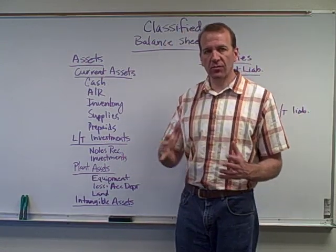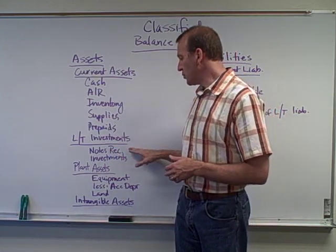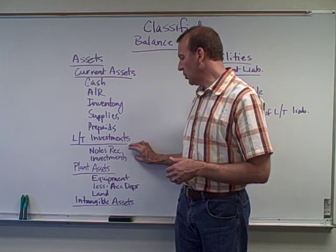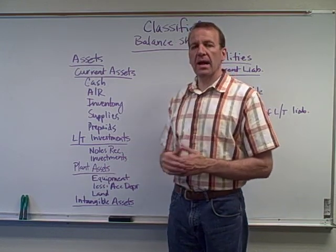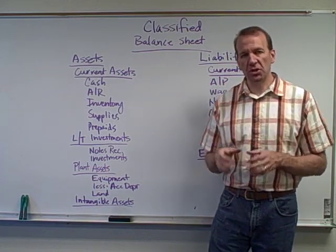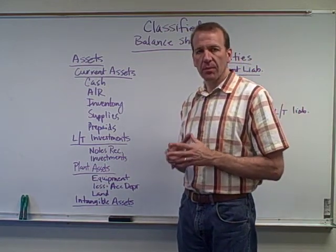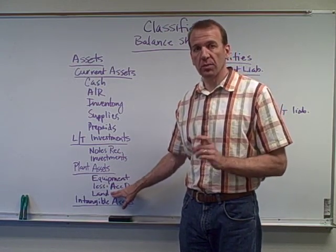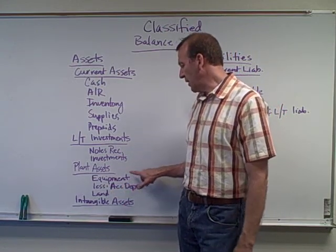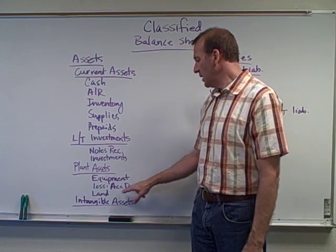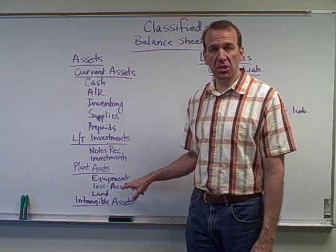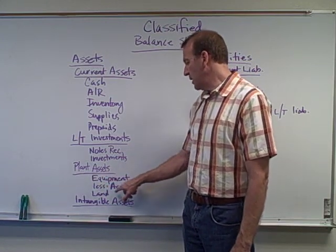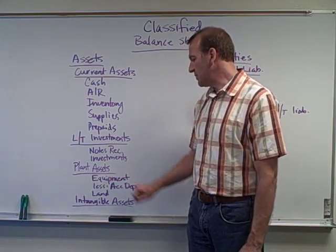Long-term investments are things that we'll be holding for more than a year — notes receivable and other investments. Plant assets would be property, plant, equipment, machinery, cars, and land. Remember, land is not depreciated, so it's separate. You'll have all your equipment-type accounts less the accumulated depreciation — that's a contra asset account with a credit balance, whereas the asset accounts have debit balances.